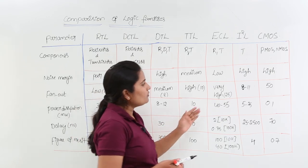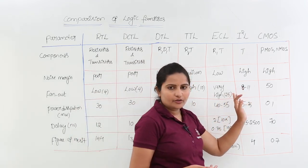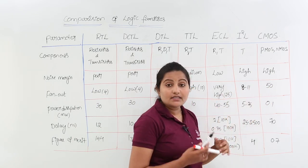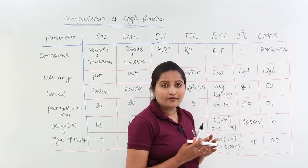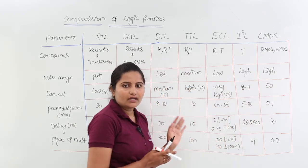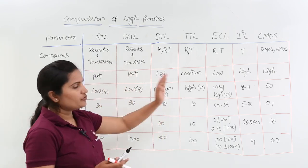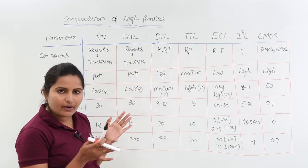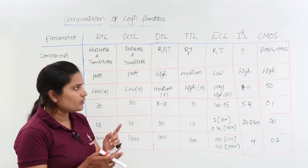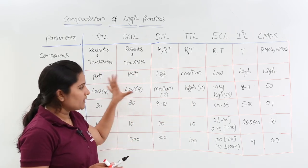For I²L the fan-out is about 8 to 12, and for CMOS it is very high at 50. So among all logic families, CMOS has the highest fan-out. If you compare only bipolar logic families, then ECL has the highest fan-out.